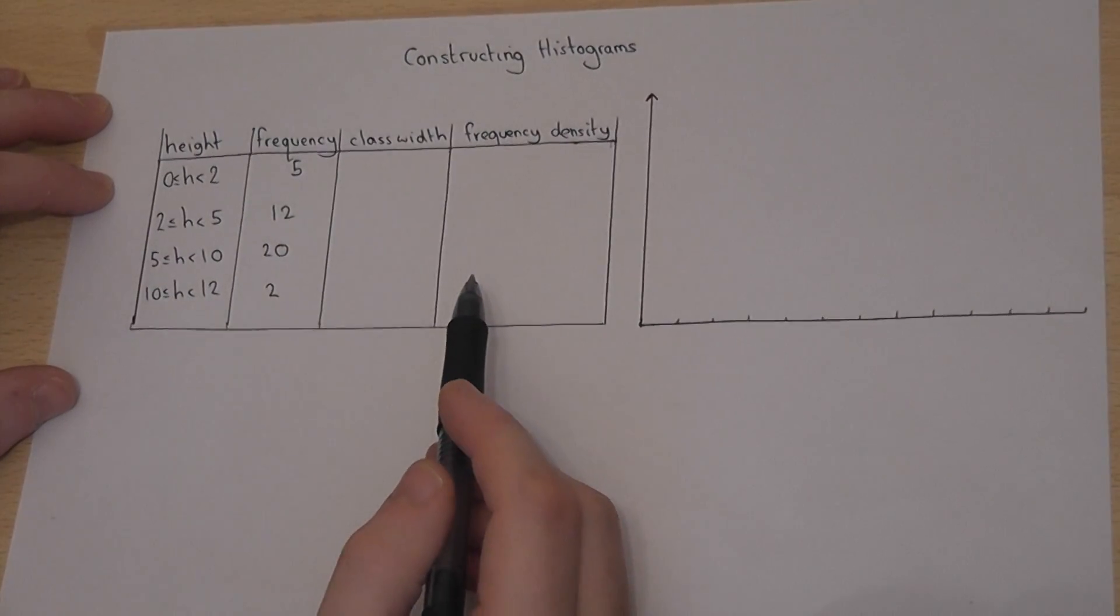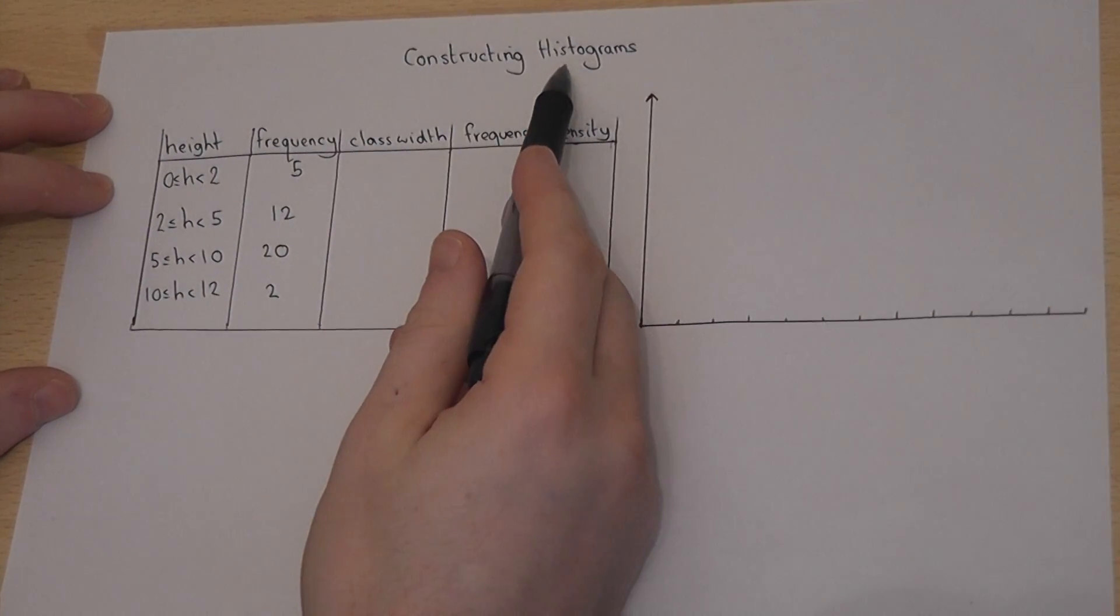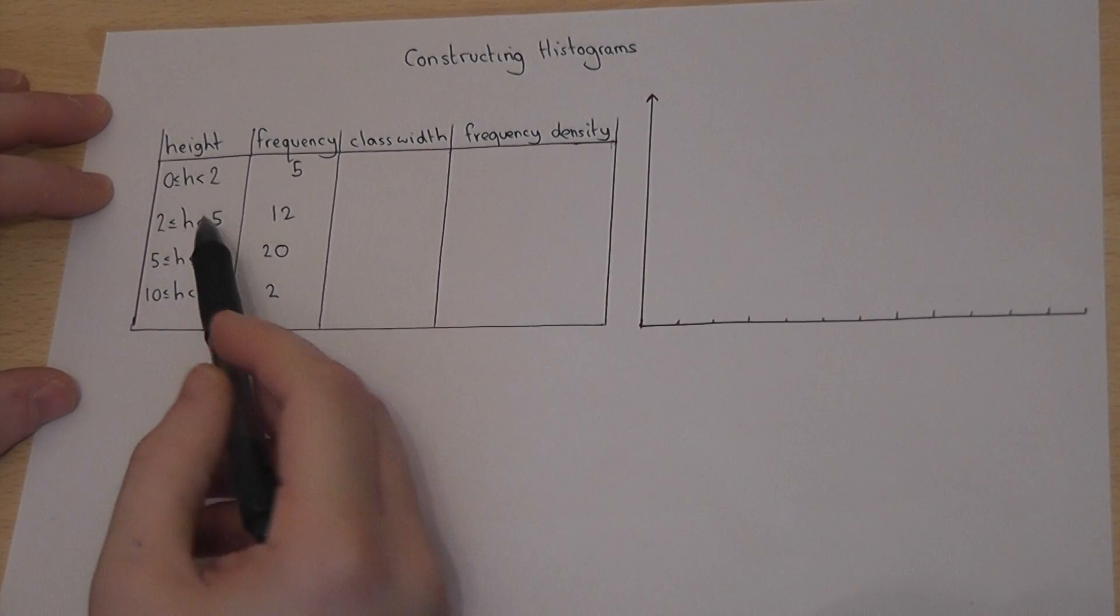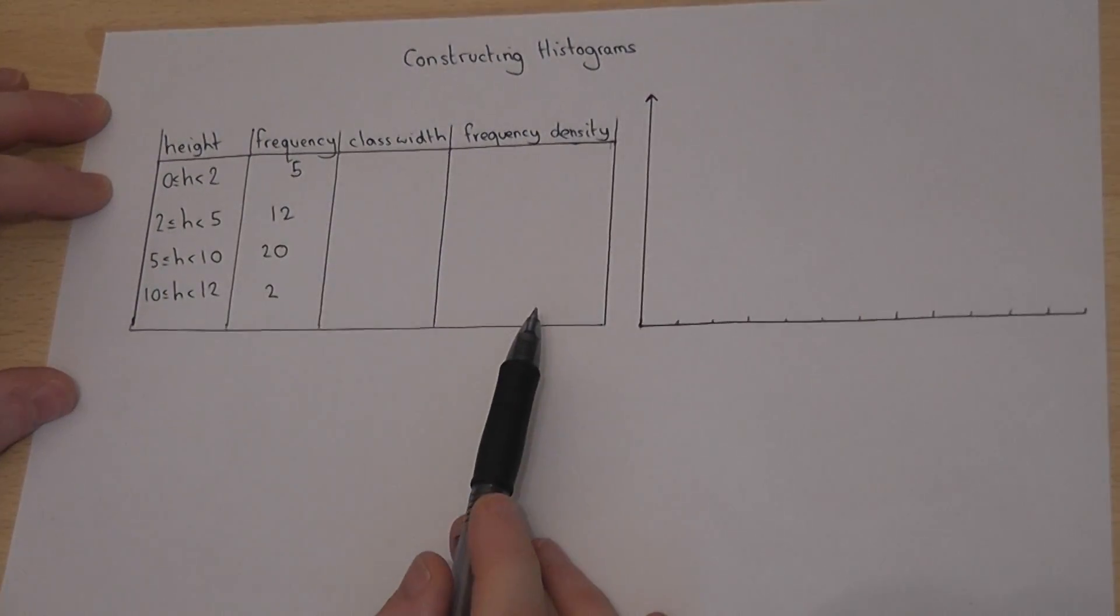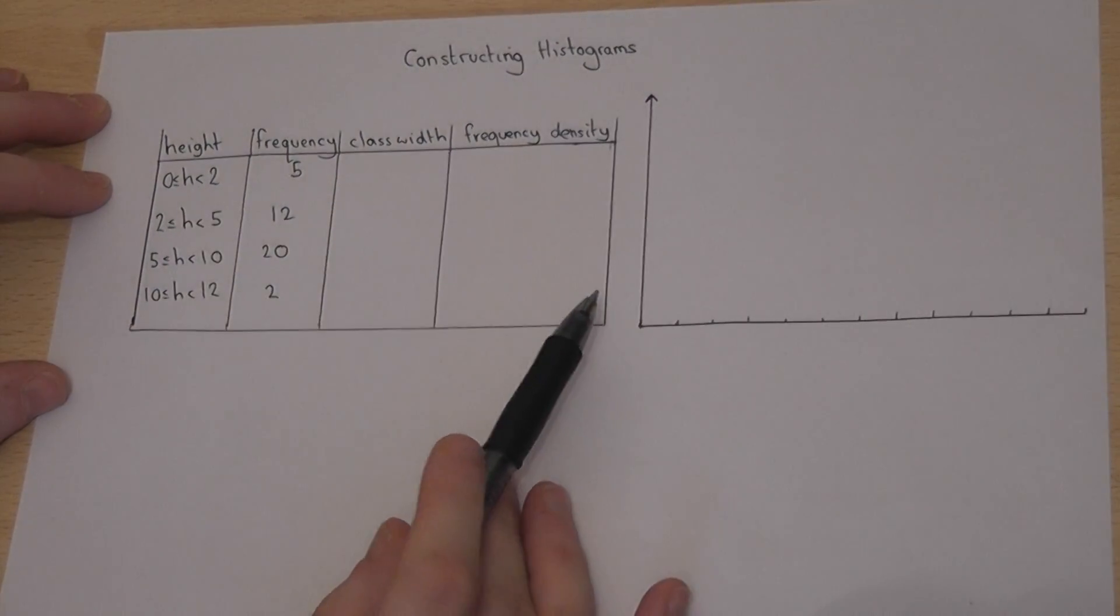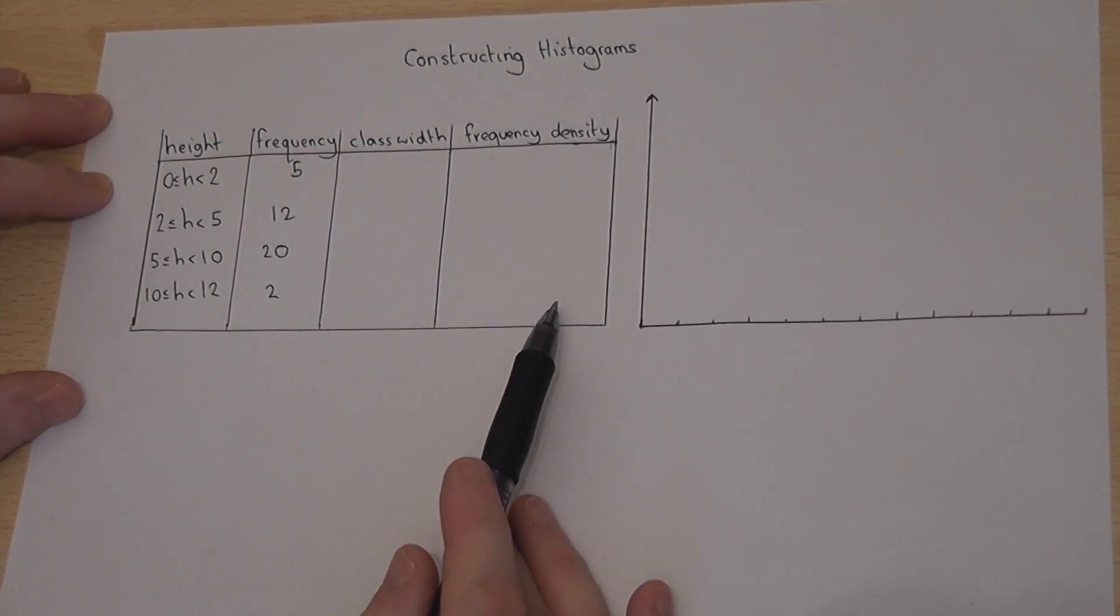This video talks through how to construct a histogram for continuous data. Suppose you've done a survey of the heights of some trees in a forest, and we want to construct a histogram to represent this information.